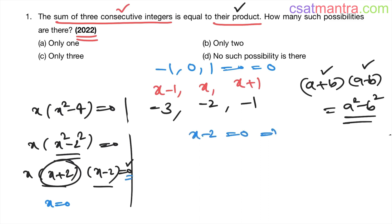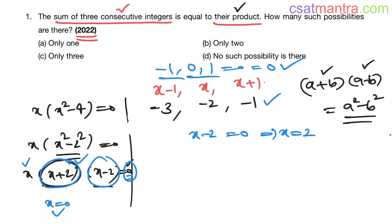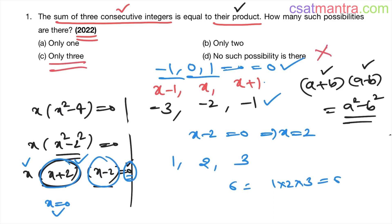When x-2 = 0, x = 2. So the integers are 1, 2, 3. Their sum is 6 and their product is also 6. So there are exactly 3 possibilities in total.